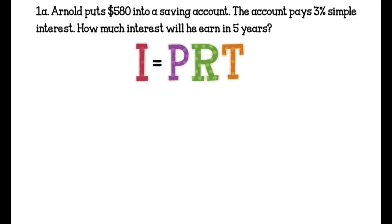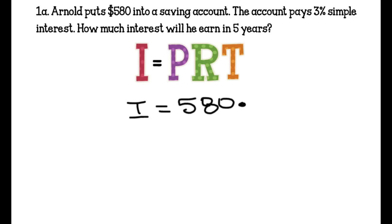Problem 1A: Arnold puts $580 into his savings account. The account pays 3% simple interest. How much interest will he earn in 5 years? We are trying to figure out how much interest he is going to earn, so we leave I as a variable because we don't know it. P is the amount he is putting in, so that is 580.